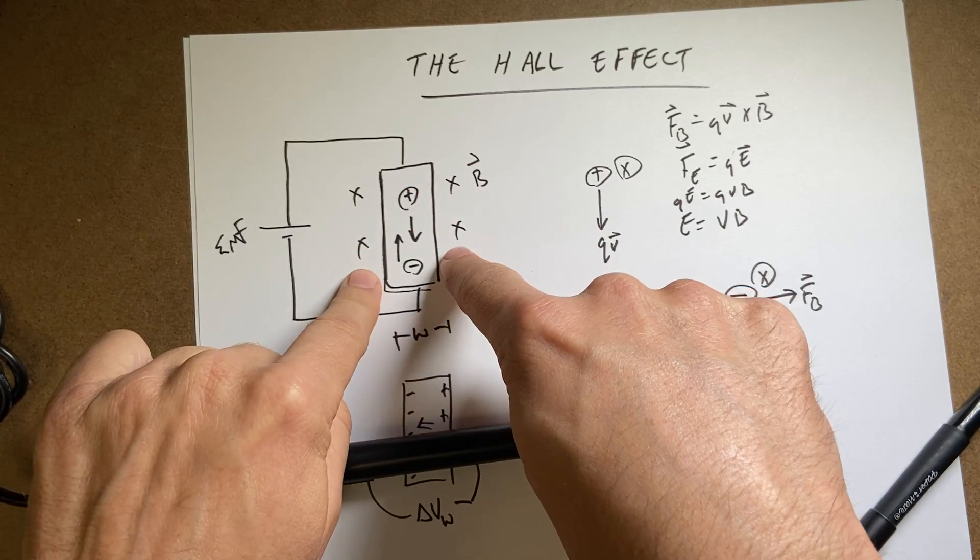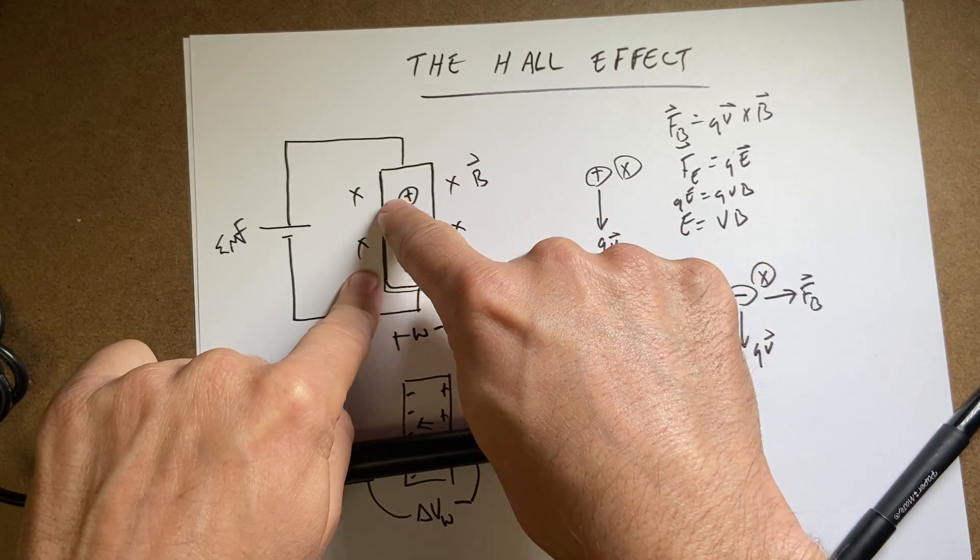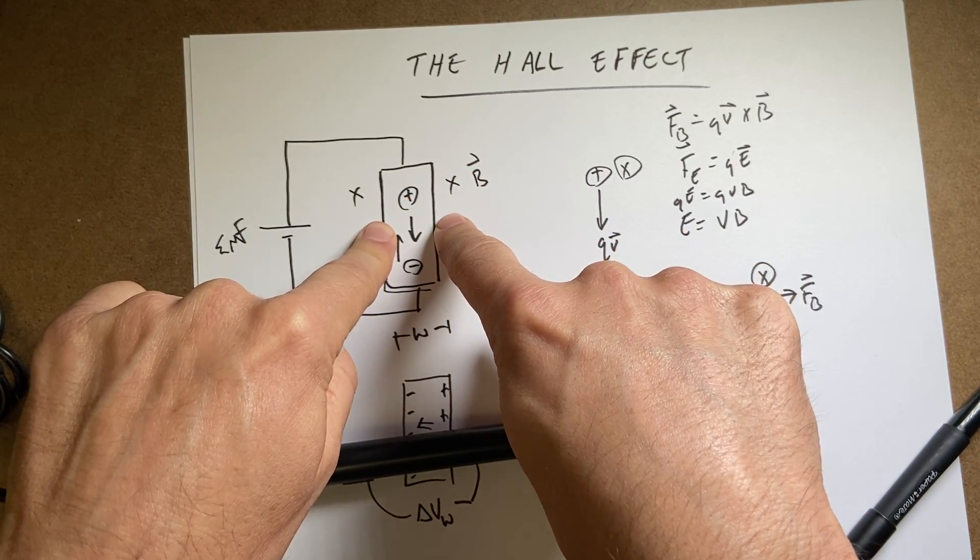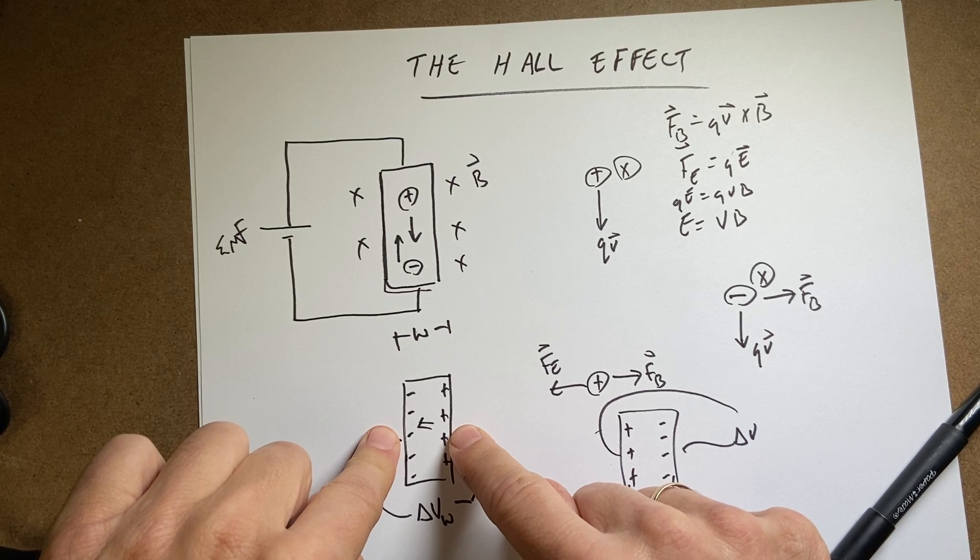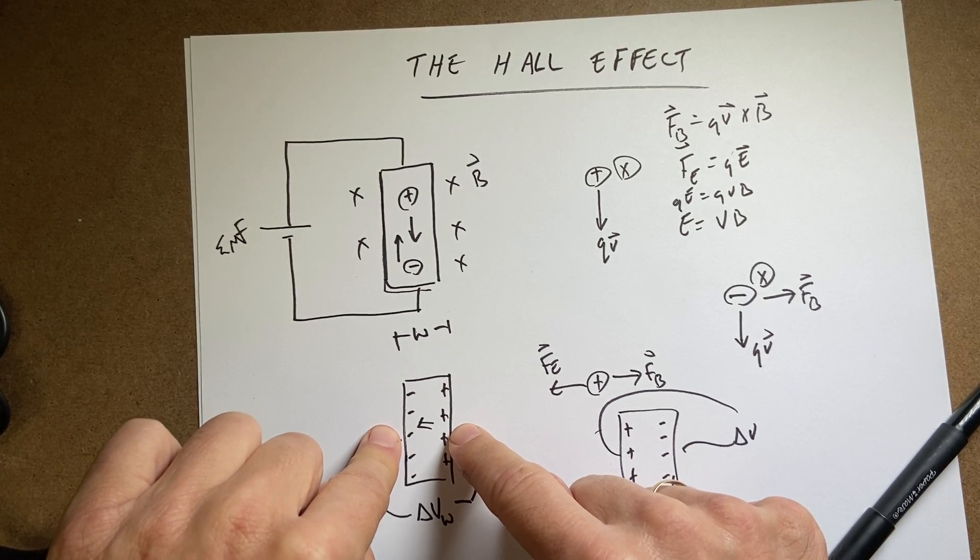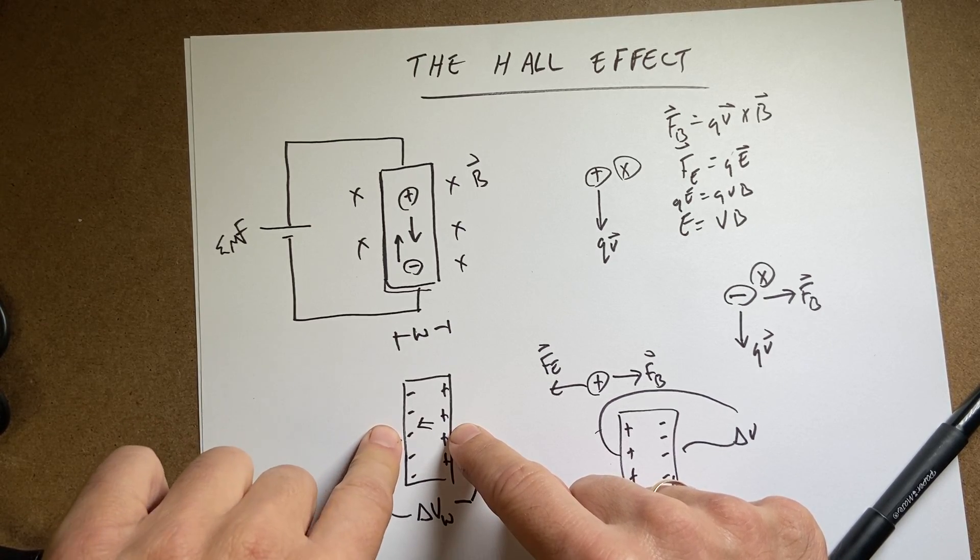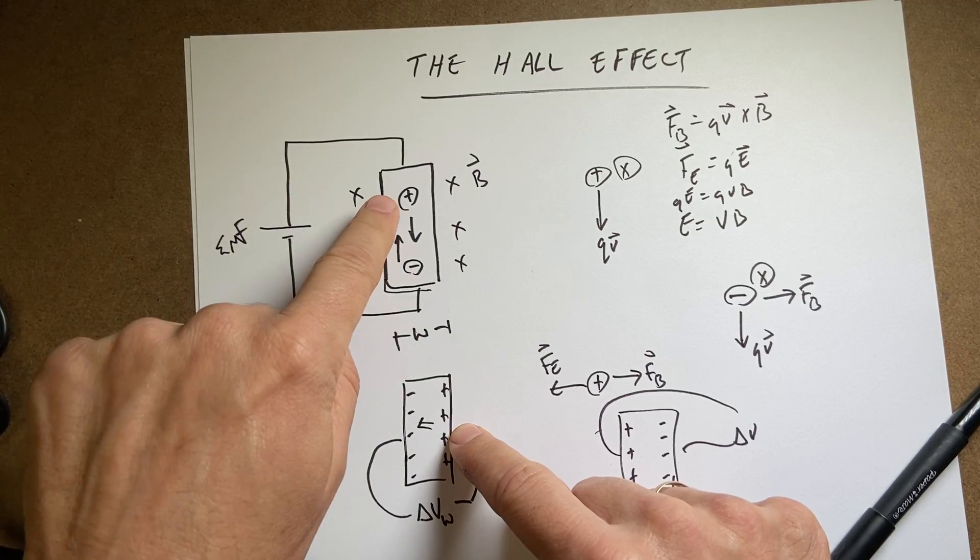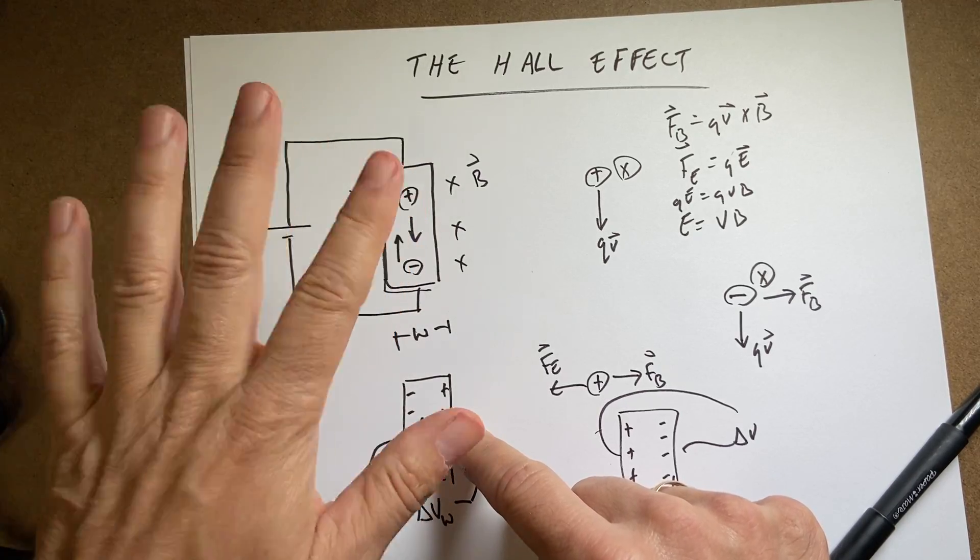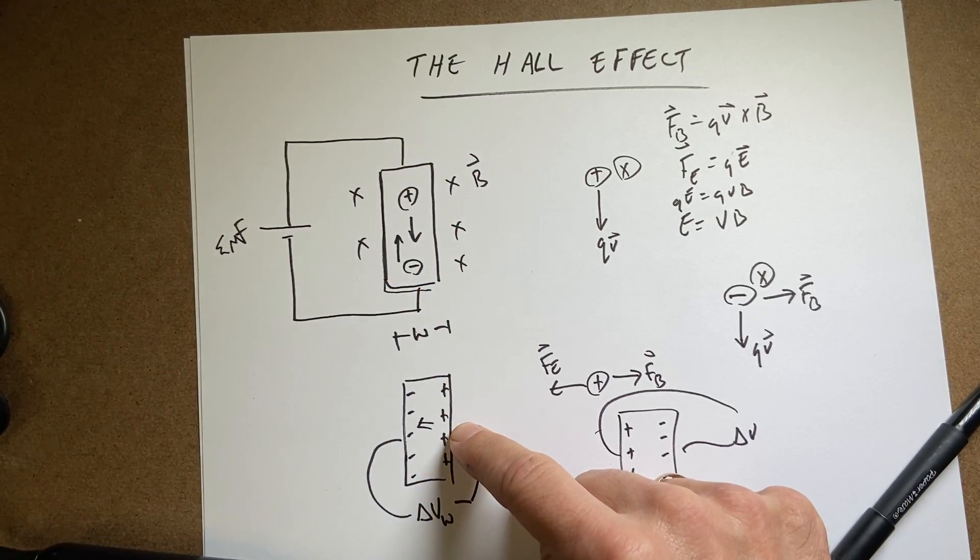But what you do is you put this sensor in the magnetic field, a voltage built up on the side, just like this. And you measure that voltage. And once you know that voltage, you can then go back. If I know the value of the current and the drift velocity and the charge carriers and the width of the sensor and all that stuff, I can calculate the magnetic field.